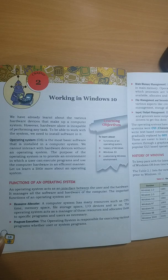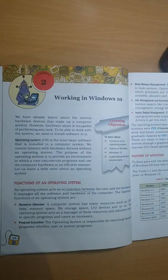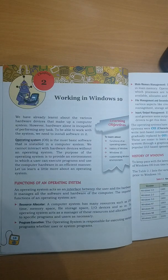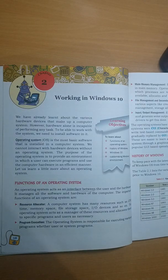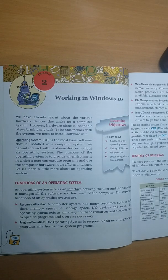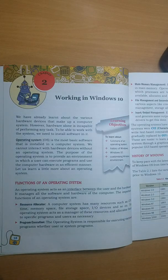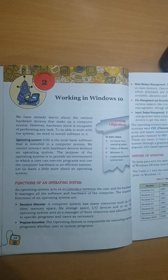Then there is main memory management. Whatever you write or create in any software, the files must be saved for future use. These files are stored in the memory of the computer. How and when memory should be allocated to a particular program, and deallocated from the program, is all managed by the operating system.